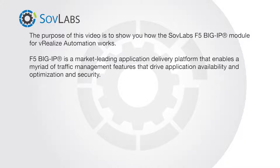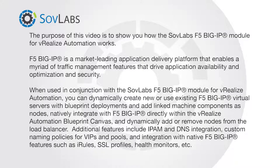F5 Big IP is a market-leading application delivery platform that enables a myriad of traffic management features driving application availability, optimization, and security. When used with the SovLabs F5 Big IP Module for vRealize Automation, you can dynamically create new or use existing F5 Big IP Virtual Servers with Blueprint deployments and add linked machine components as nodes, and natively integrate with F5 Big IP directly within the vRealize Automation Blueprint Canvas.